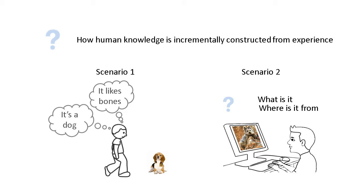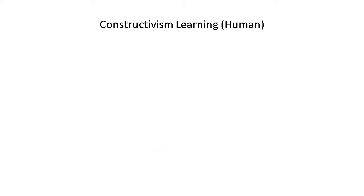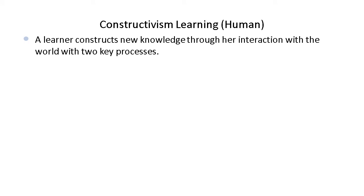With those two scenarios in mind, now let us look at constructivism learning, a theory about how people learn. It has profound impact on modern viewpoints about the nature of knowledge. In the constructivism theory, a learner constructs new knowledge through her interaction with the world with two key processes: assimilation and accommodation.